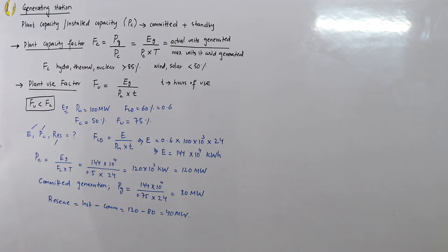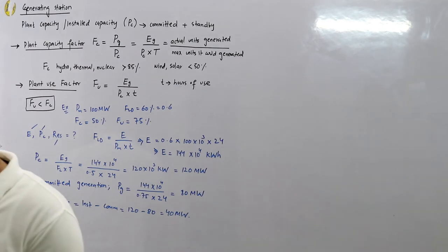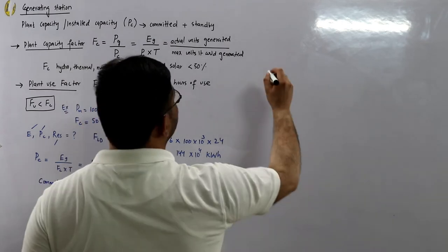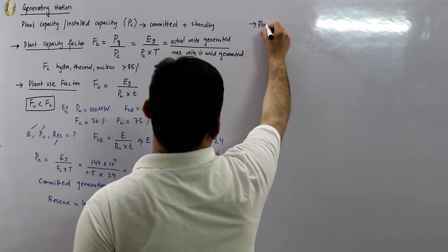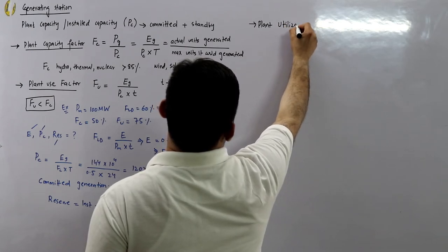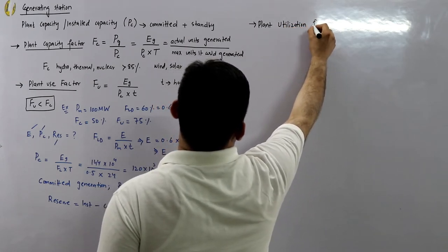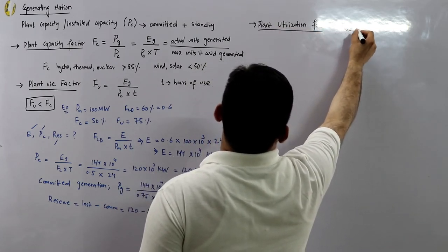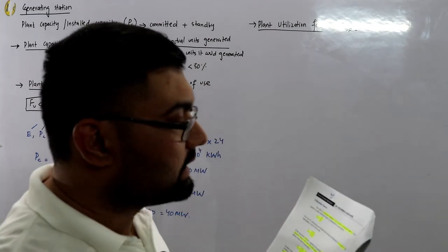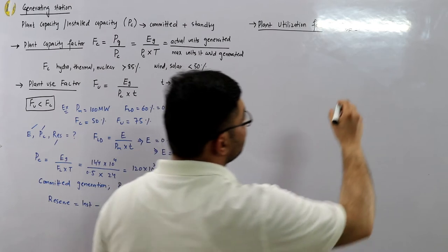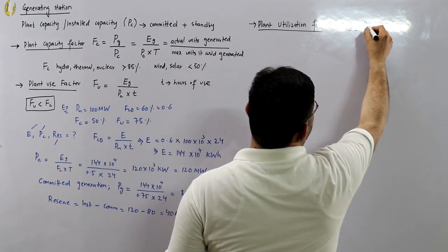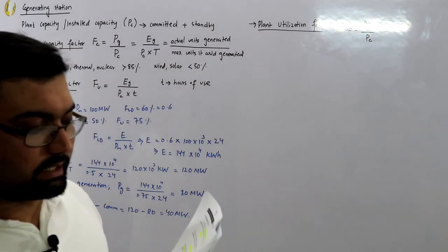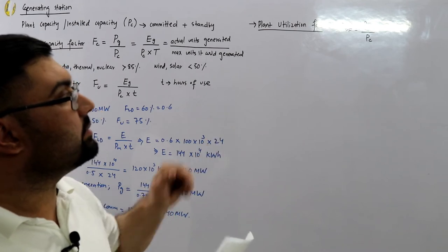We have another term: the plant utilization factor, represented by FUF. This is the ratio of the maximum demand on the station, PM, to the rated installed capacity PC. So the utilization factor FUF equals PM divided by PC.